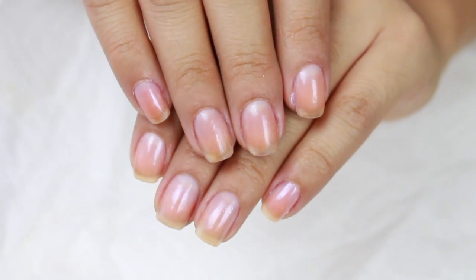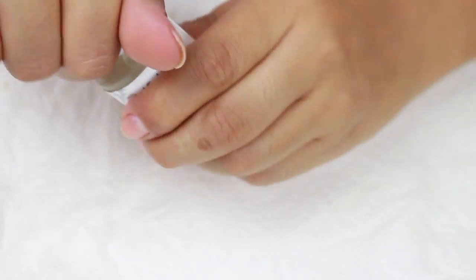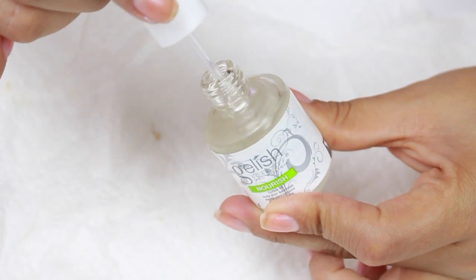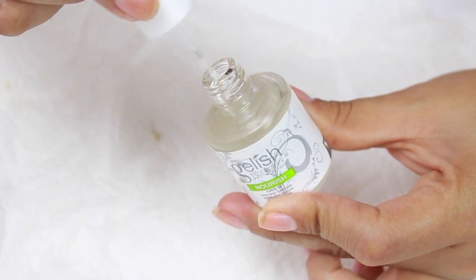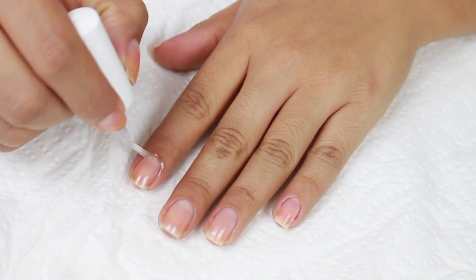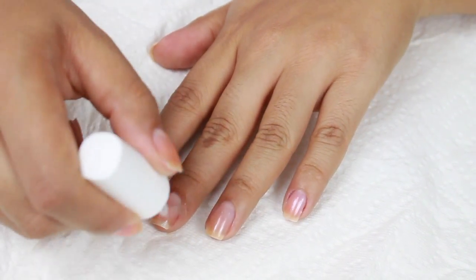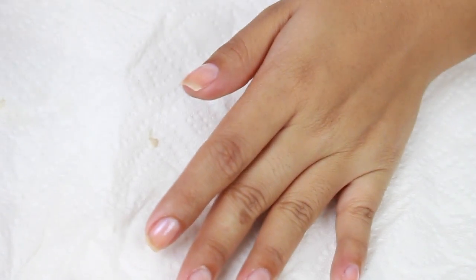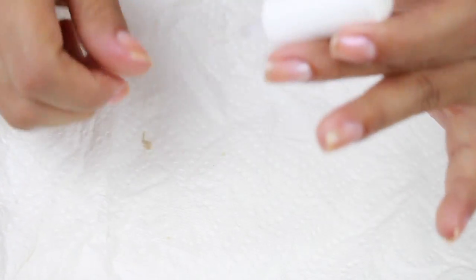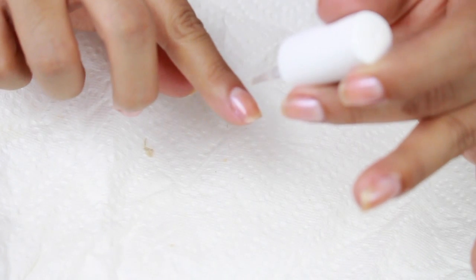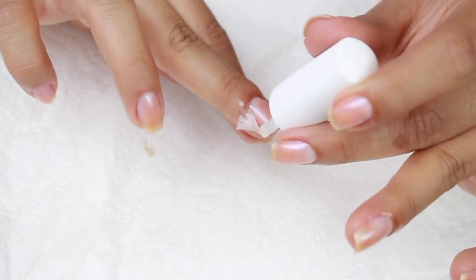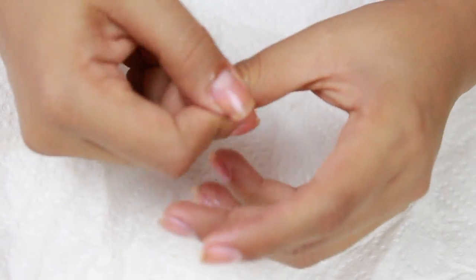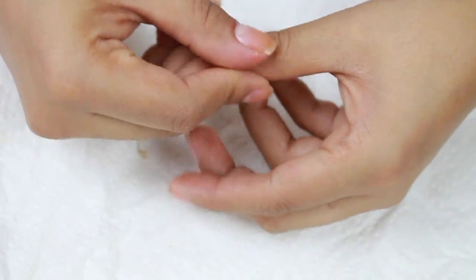As you can see, I go along with cuticle oil. This is by Gelish and I really like this one. There's also a really good one by Lush called Lemony Flutter, and there's also a good one by California Mango, like a mango balm. You can put that around as well, but today I'm just using this one by Gelish. It's called Nourish and I just put it around the cuticles, and then I'm going to massage it into my nail bed.